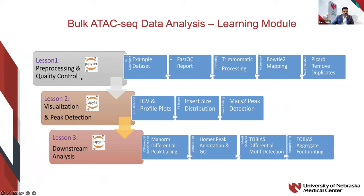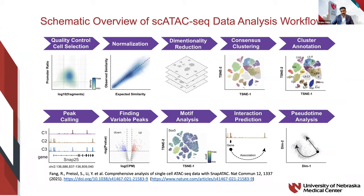In lesson one, you look at pre-processing and quality control aspects, followed by visualization and peak detection, then peak annotation to understand gene regulation. In the single-cell ATAC-seq workflow, the downstream part is similar to bulk analysis, but in the front end the single-cell data is clustered into different clusters based on similarity of chromatin accessibility, and downstream analysis is done at each cluster level. In bulk analysis, you do the entire analysis as one cluster — that's the main difference.